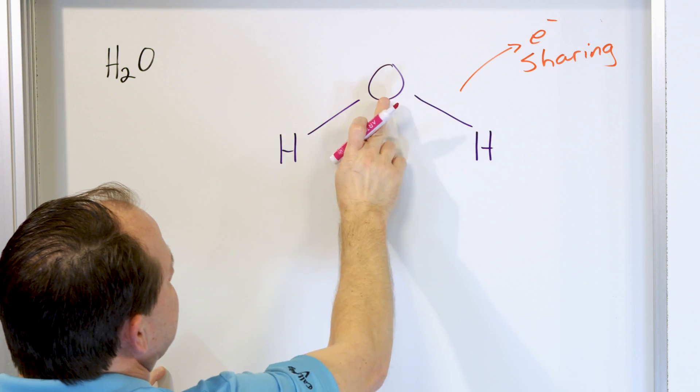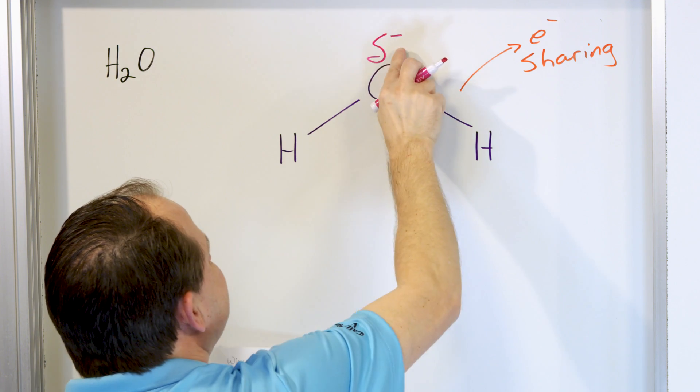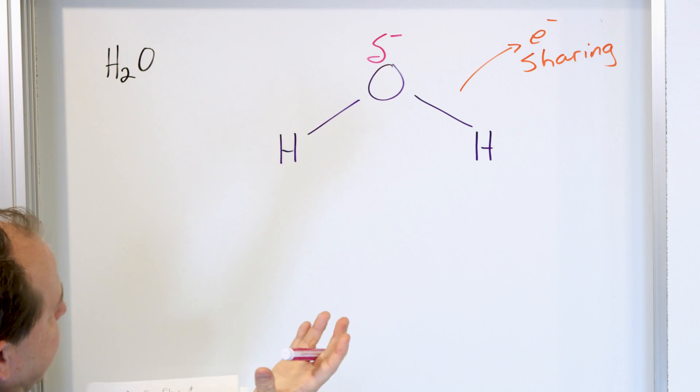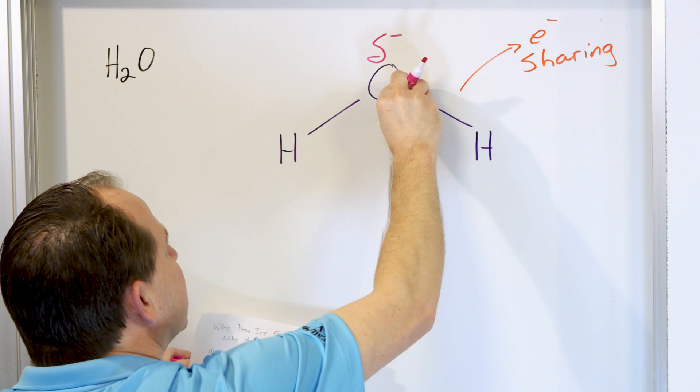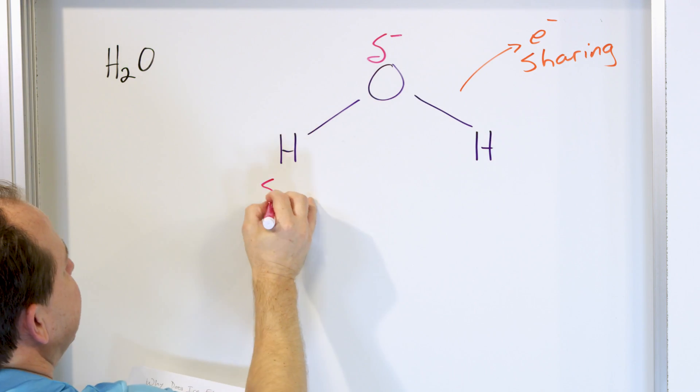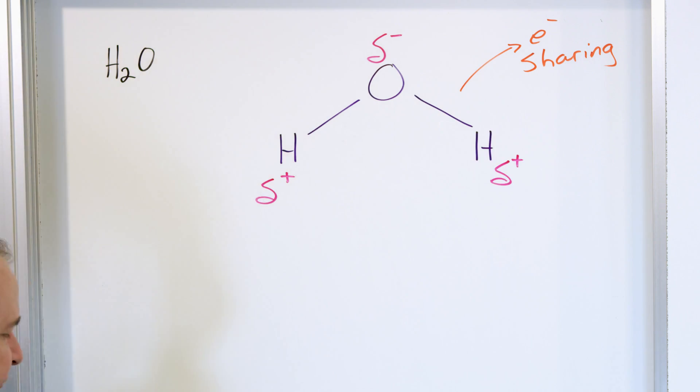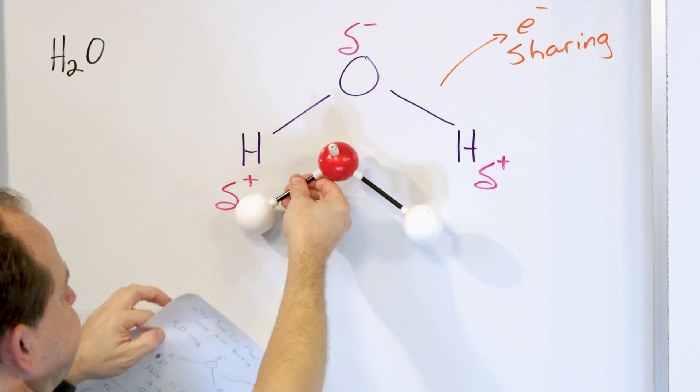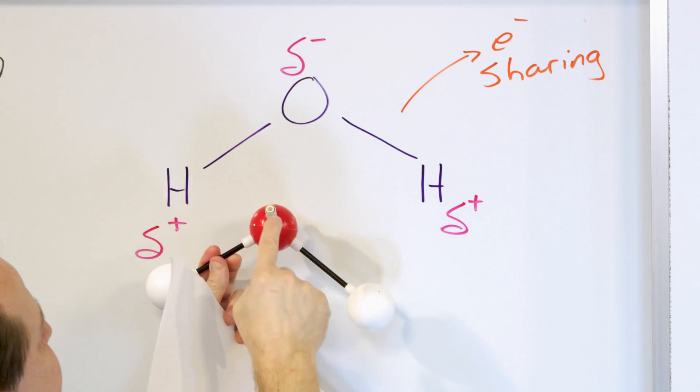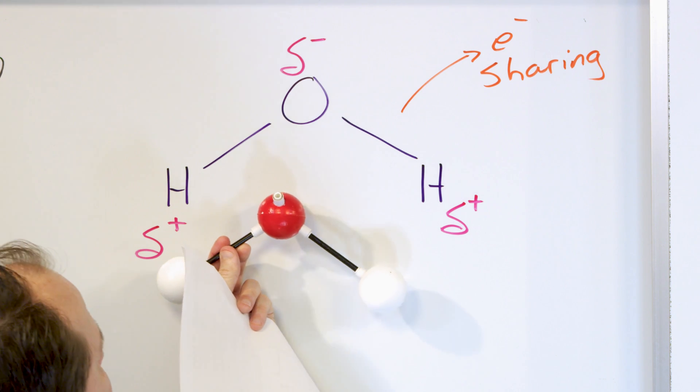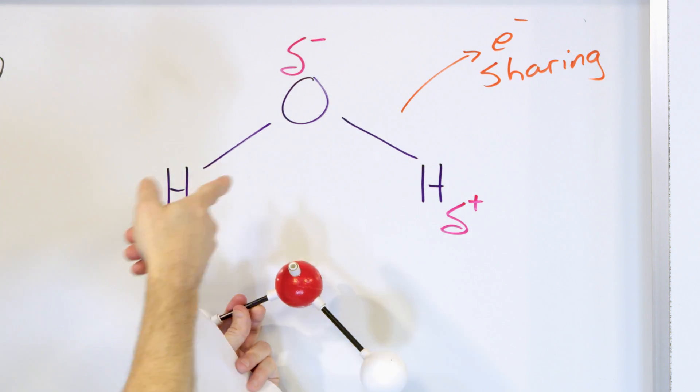Even though we're sharing electrons between these atoms, because oxygen can pull them a little stronger, we say that there's a very slight negative charge here. Don't get scared by this little Greek symbol, delta. It just means there's a slight negative charge on the oxygen atom because it's pulling these electrons a little closer to the oxygen. But since it's pulled closer to the oxygen, that means there's a slight positive charge on the hydrogen atom and a slight positive charge on this hydrogen atom.